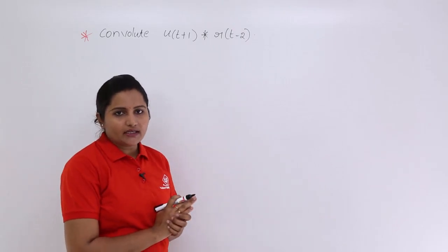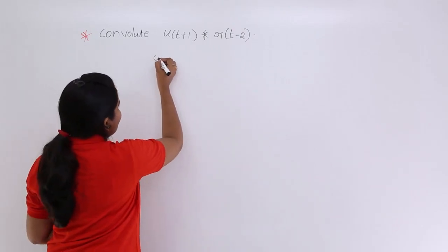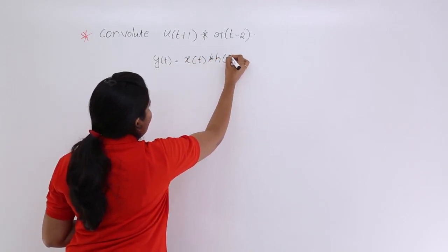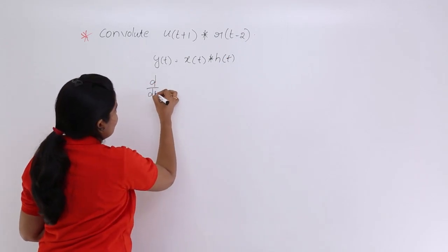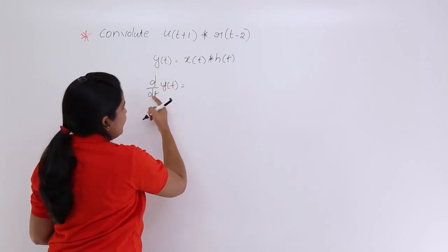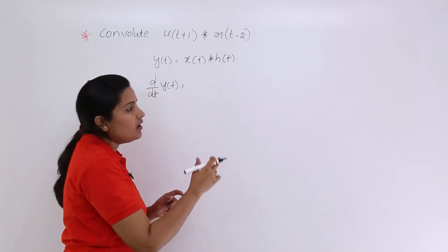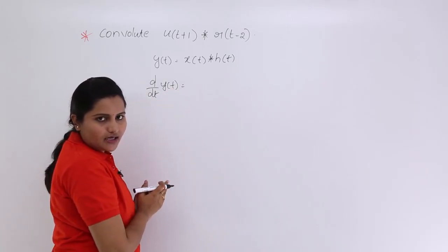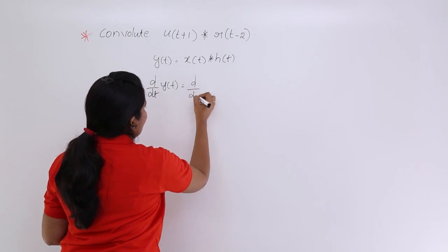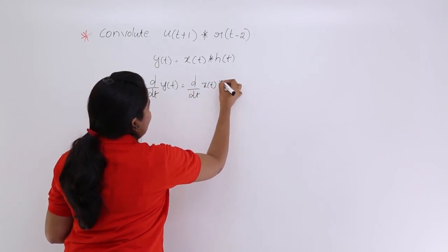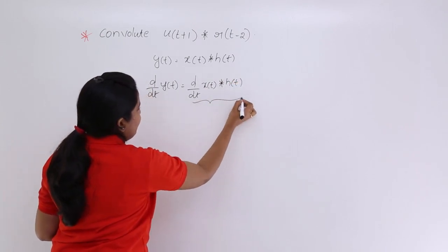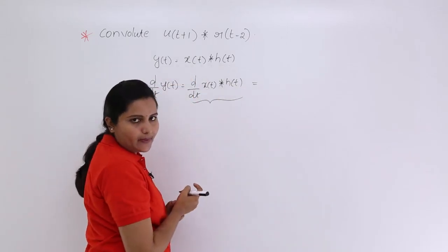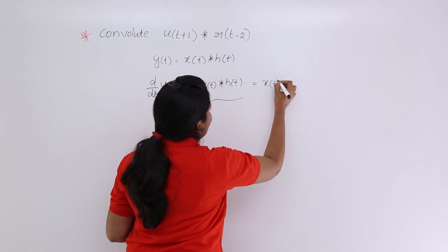The differentiation property of convolution states: if y(t) = x(t) * h(t), and you need to find d/dt of y(t), you can take the differentiation for any one of the signals. That means you can consider d/dt of x(t) convolved with h(t), or equivalently x(t) convolved with d/dt of h(t).